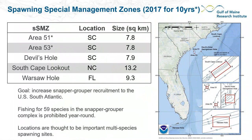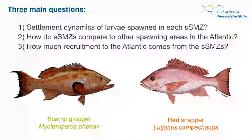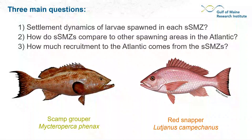I'm going to focus on three main questions: first, what are the settlement dynamics of larvae spawned in each spawning SMZ? Second, how do the spawning SMZs compare to other spawning areas in the Atlantic? And third, how much of the overall recruitment to the Atlantic comes from each, or the total from all five spawning SMZs together?